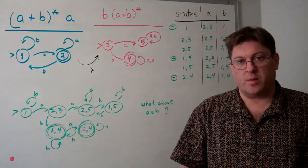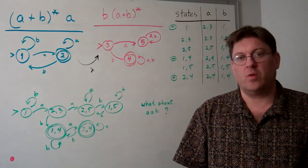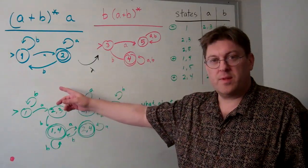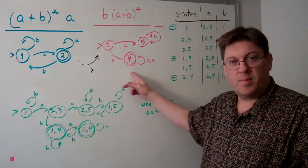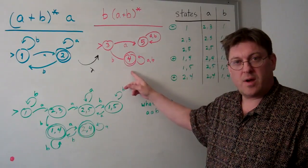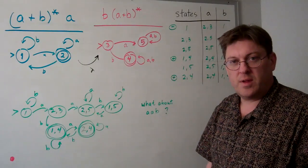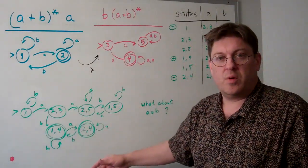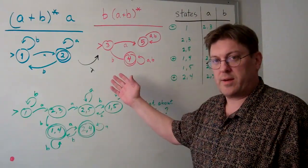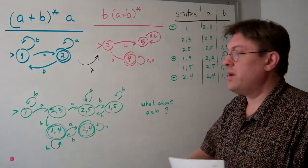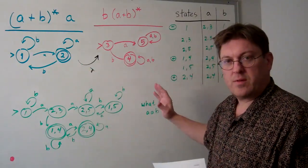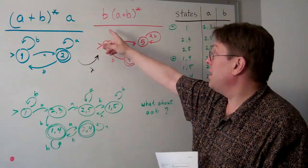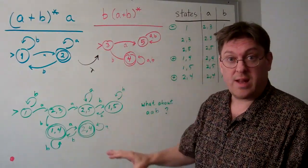In class yesterday, we had a little problem. We wanted to concatenate two finite state automatons. We have this A plus B star A in blue here, and we have this B, A plus B star in red here. We got these two automatons, which you're just going to have to accept are correct. We want to concatenate them, so we're going to try to end up with the expression A plus B star AB, A plus B star — something with an AB in the middle.